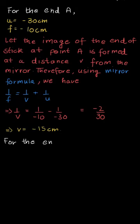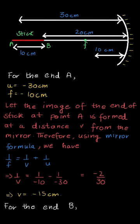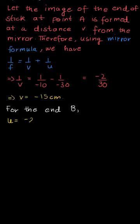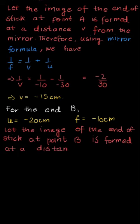Similarly, we will do it for end B. For end B, if we see from the image, we have end B here. Its object distance is 20 cm and the focal length is the same. So U = −20 cm and focal length = −10 cm. Let the image of end B be formed at a distance V' from the mirror.